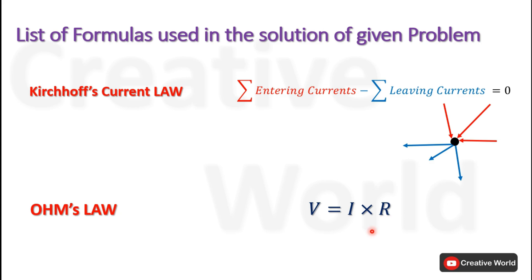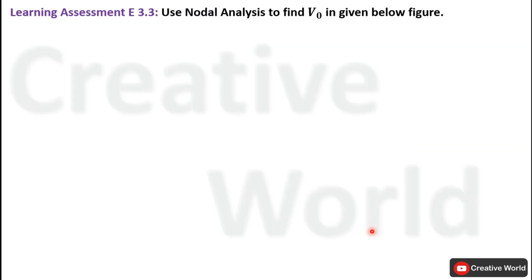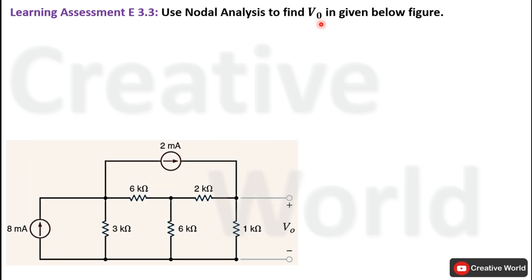Now let's move towards the problem — Learning Assessment E3.3. Use Nodal Analysis to find the value of voltage V0 in the given figure. This is the circuit diagram of the given problem. Inside this network, we have to find the voltage across the 1 kΩ resistance labeled as V0, using the Nodal Analysis technique.